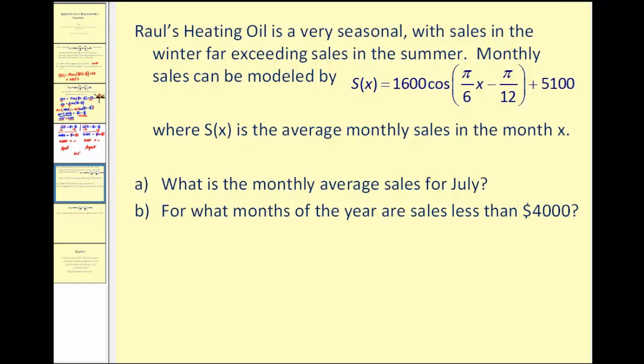Raoul's heating oil is very seasonal, with sales in the winter far exceeding sales in the summer. Monthly sales can be modeled by this function, where S(x) is the average monthly sales in the month x, where x equals one is January and so on. The first question, what is the monthly average sales in July? Well, July is the seventh month, so we have x equals seven.